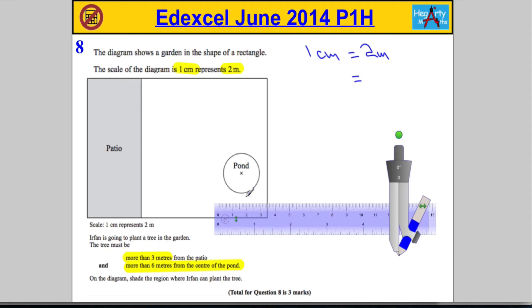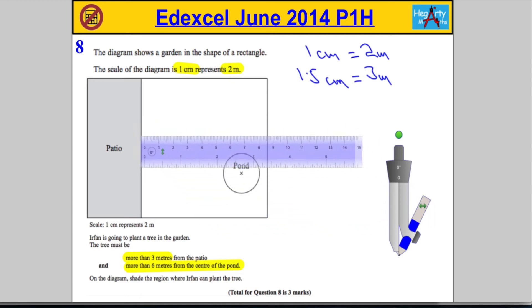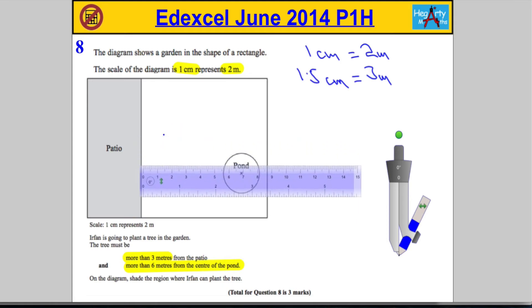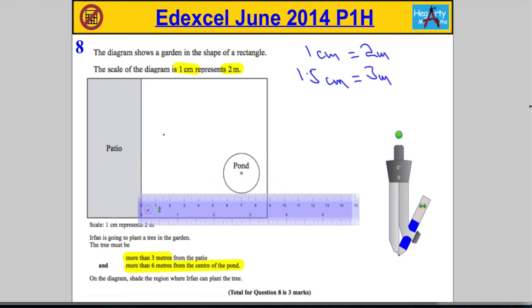Hopefully we can recognize straight away 3 meters is going to have to be 1.5 centimeters. So we need to measure 1.5 centimeters from the patio. I'm trying to get this lined up as accurate as possible. I'm going to mark here 1.5 centimeters, and I'm going to move it anywhere else and mark 1.5 centimeters here as well.